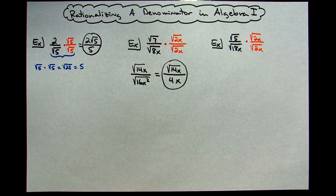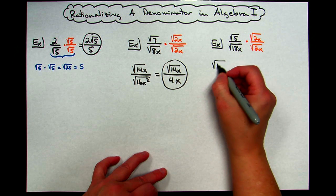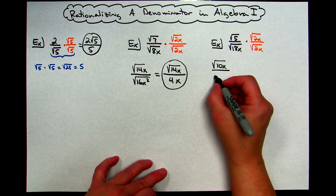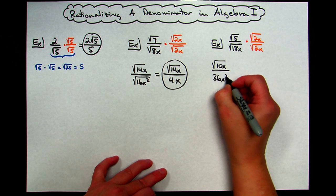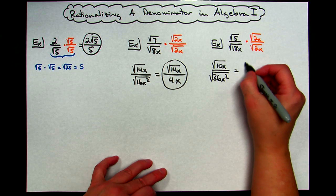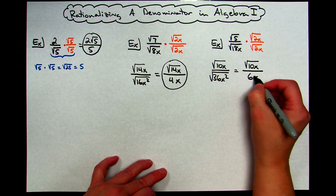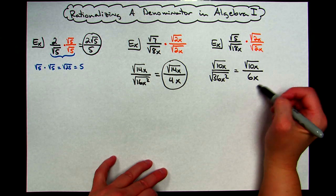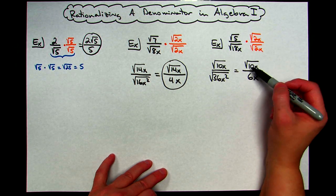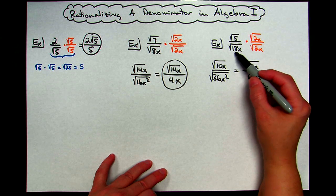Multiplying across the top, I'm going to have square root of 10x. Multiplying across the bottom, 18 times 2 is 36x squared — square root of that — which is a perfect square. Simplifying, my numerator stays the same: square root of 10x, and that denominator goes to 6x. I am in simplest form because I chose to multiply by a form of 1 which made a perfect square — the smallest perfect square after 18 that I could come up with.